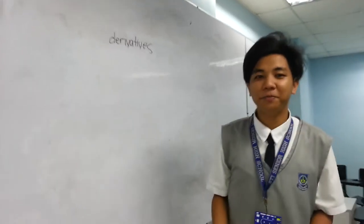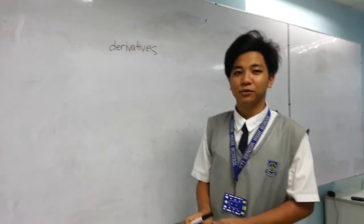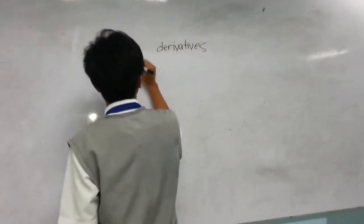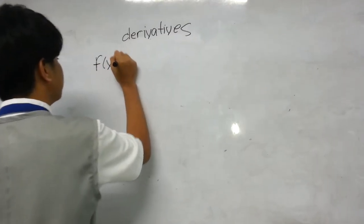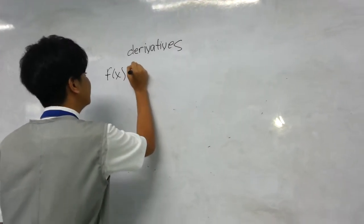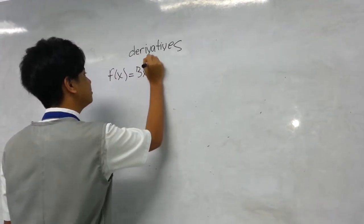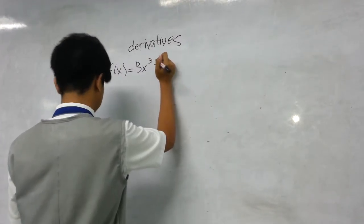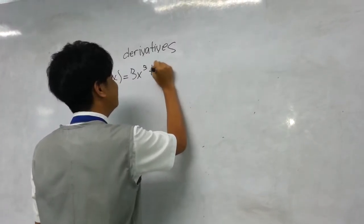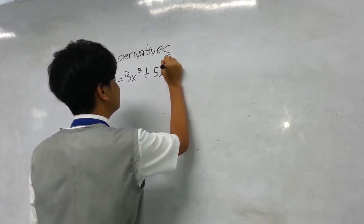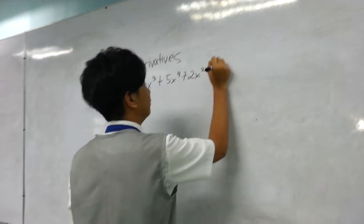And here are my examples to solve derivatives. F of x is equal to 3x cubed plus 5x to the 4th plus 2x squared plus 1.